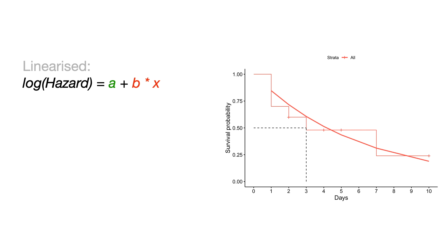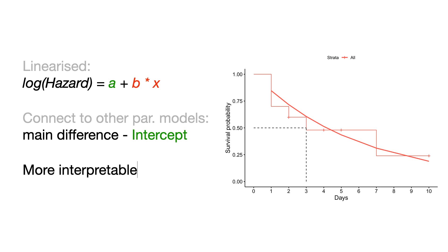Secondly, it will help us to connect to further parametric models if we need, for example, Weibull and Cox models, because the difference between them lies mainly in the intercept a. And finally, it will greatly increase the interpretability, because the hazard ratios, that's what the exponential models deliver, can be interpreted exactly like the odds ratios from the usual logistic regression. Similarly to the odds in the logistic regression, the hazard itself, which is the probability of dying now, is less useful than the hazard ratio.